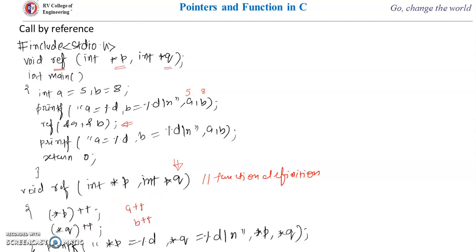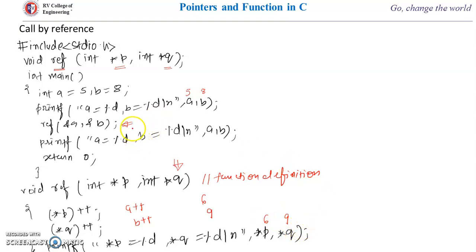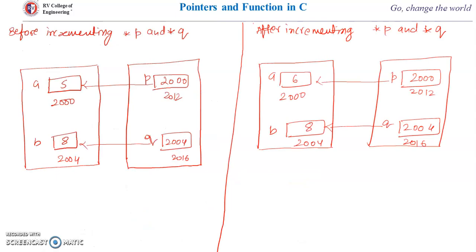The values become 6 and 9. We then print *p and *q, which gives the values stored at those address locations, so 6 and 9 will be printed inside the function. After this, control returns to the main function, and here also 6 and 9 will be printed for a and b.